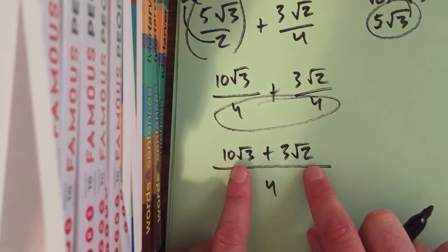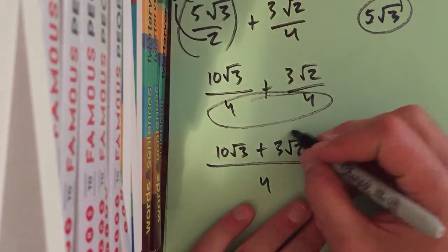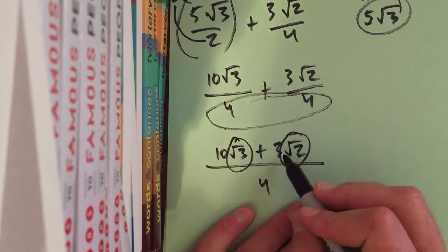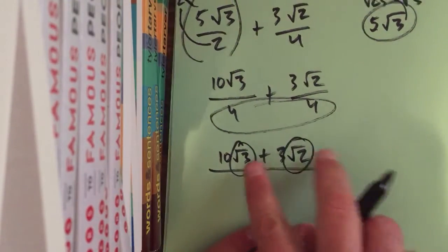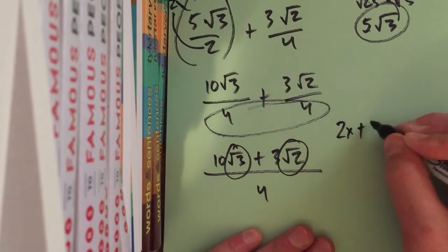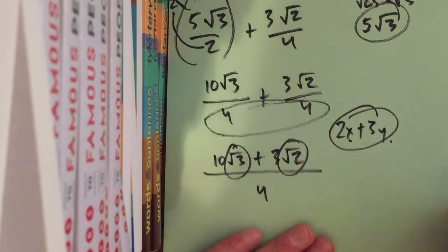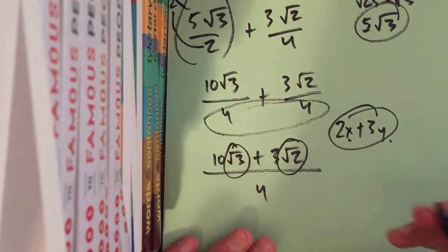We cannot simplify these two together, because they have to have the exact same number under the radical for us to be like, oh, 10 plus 3 is 13. We can't do that. It's like trying to say 2x plus 3y. You can't do it. It has to stay like that, because x and y are different, just like these are different.